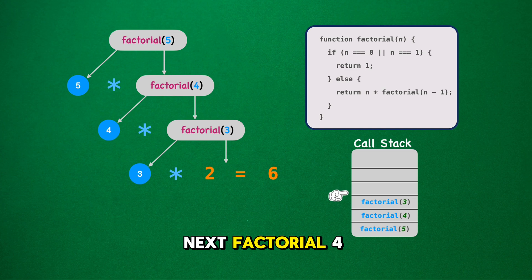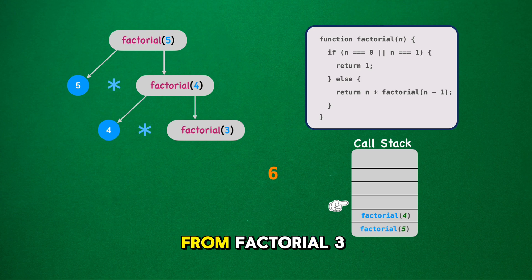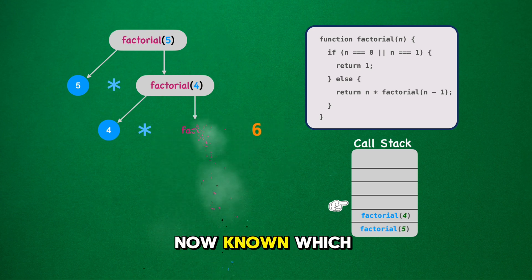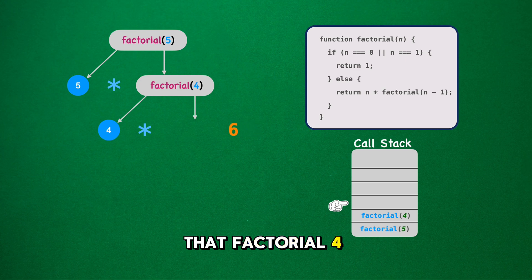Next, factorial 4 had been paused at 4 asterisk factorial 3. With the value from factorial 3 now known, which is 6, we can conclude that factorial 4 is 4 asterisk 6, resulting in 24.